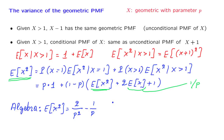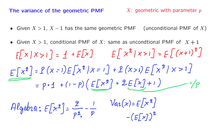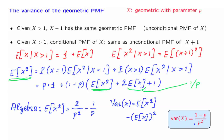Then we use the formula that the variance of a random variable equals the expected value of the square of that random variable minus the square of the expected value. We already know the expected value, and we found the expected value of the square. Putting it all together, we obtain the final expression for the variance of a geometric random variable. This calculation assumes that the parameter p is positive.